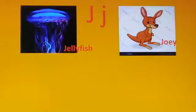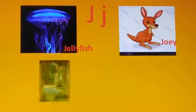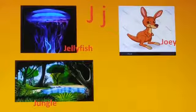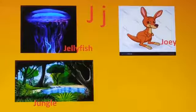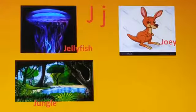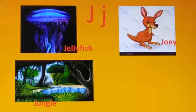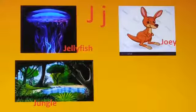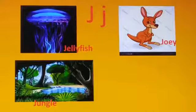Joey: A baby kangaroo is called a joey. Jungle: A jungle is a forest where large numbers of tall trees and plants grow very close to each other. Many animals such as elephants, tigers, monkeys and other wild animals live in the jungle.